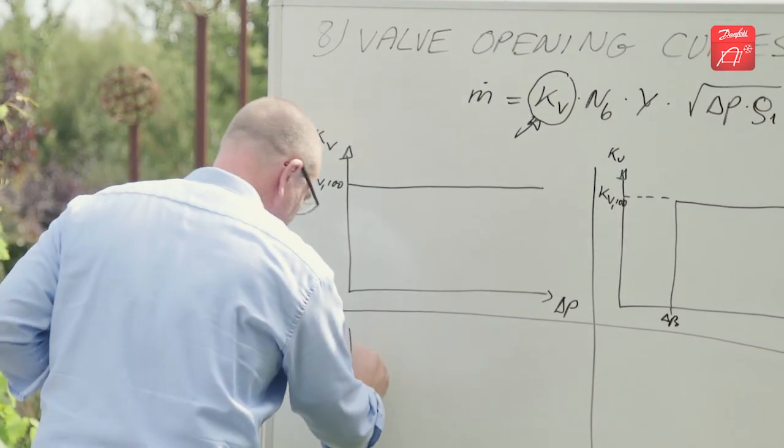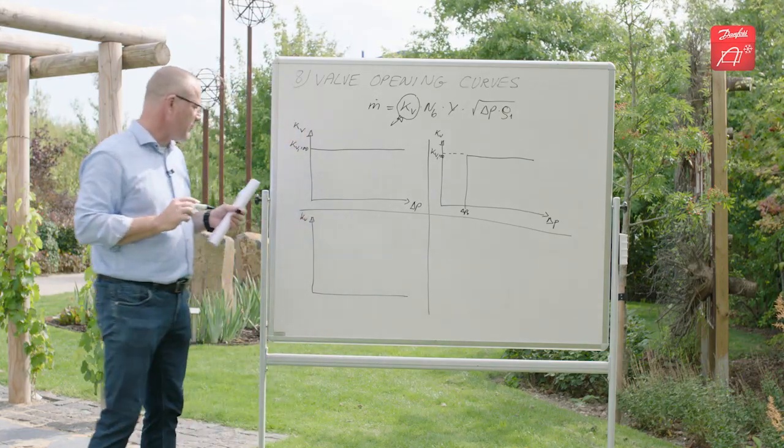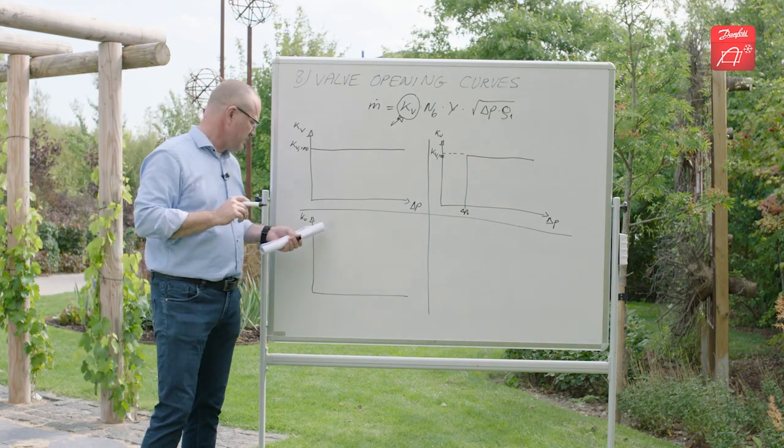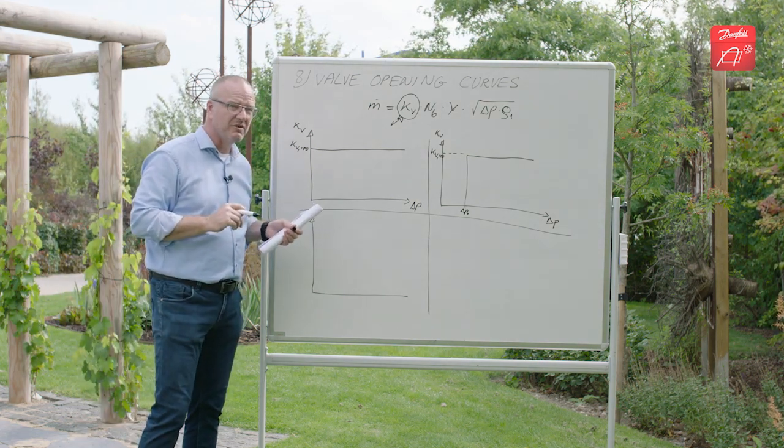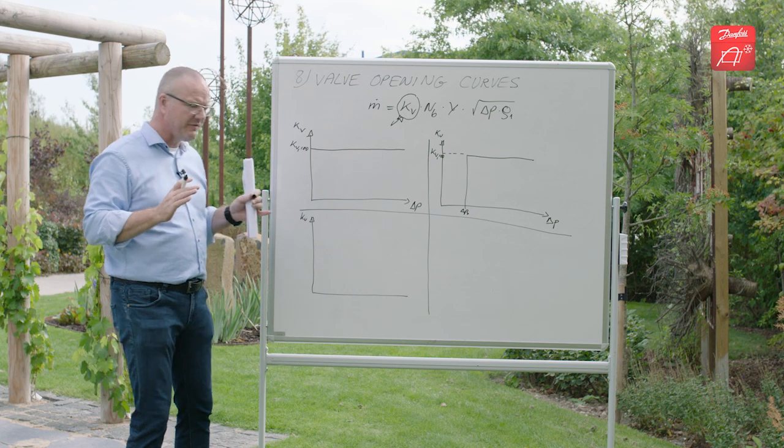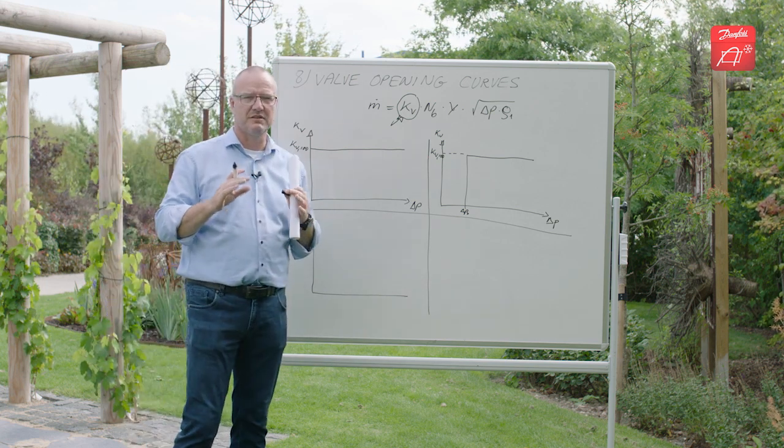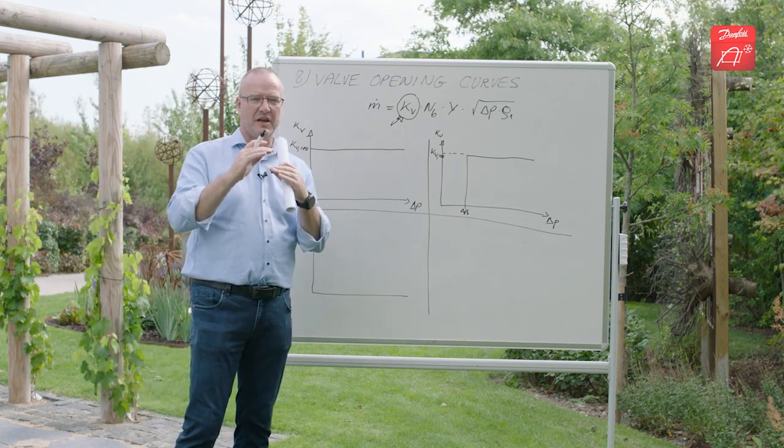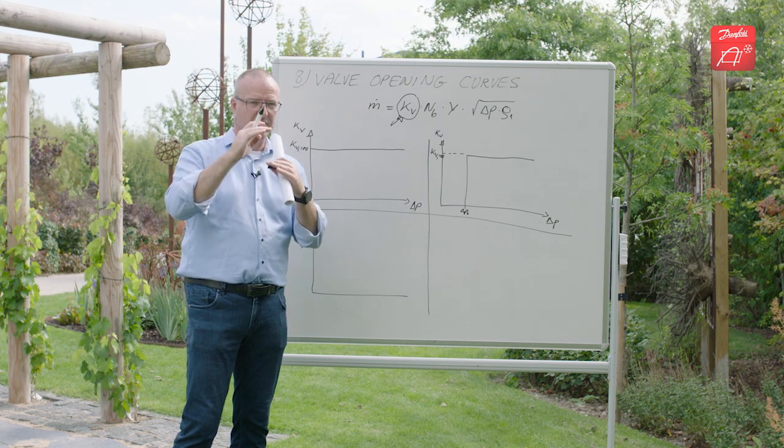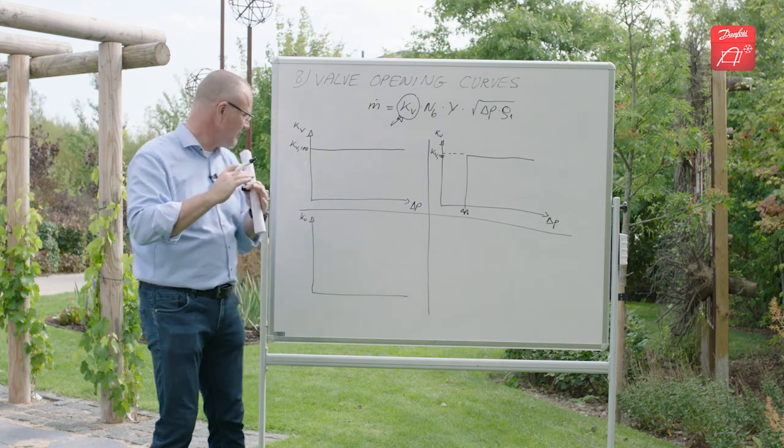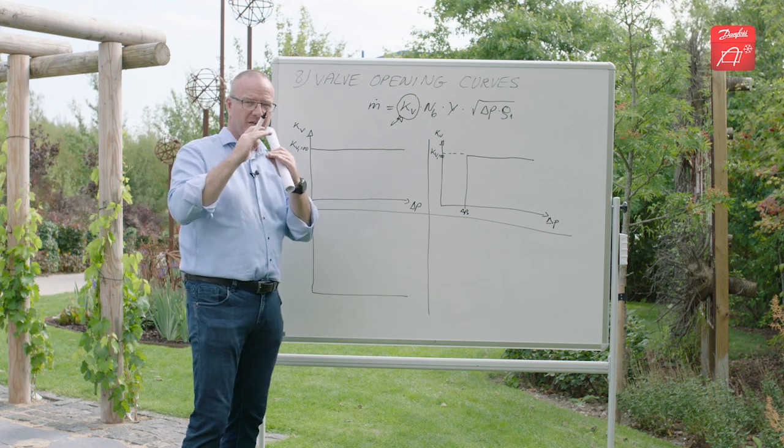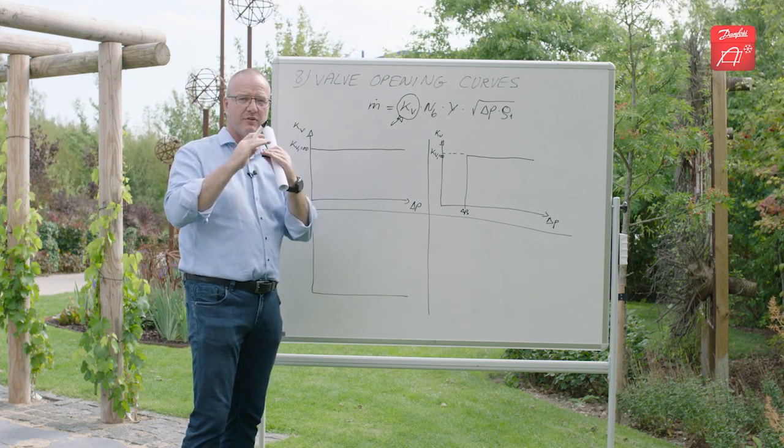The third valve type, that is the direct operated control valves or the manual control valves. These valves you actually have the possibility to control the valve cone position. You can adjust it whether it should be 50% open or 100% open or 25% open for that matter. You have a direct possibility to control the valve opening.